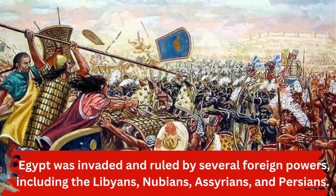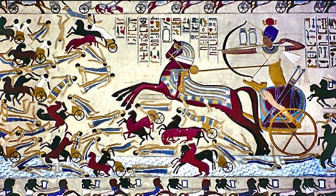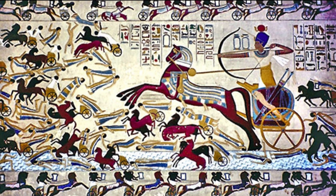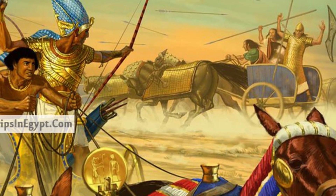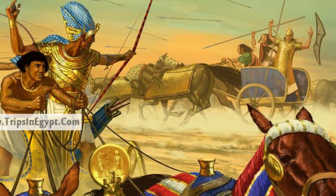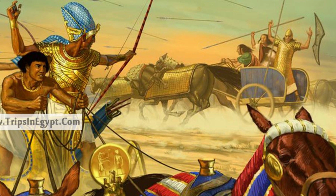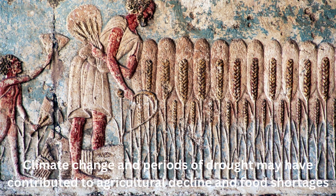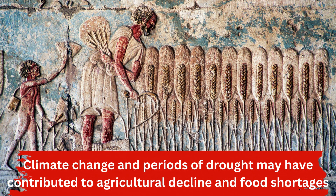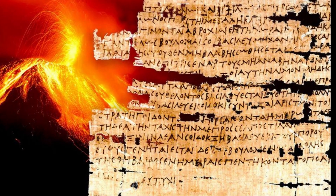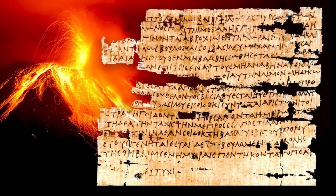These foreign powers often imposed their own political, economic, and cultural systems on Egypt, weakening the country's sense of identity and cohesion. Another factor was internal political instability and power struggles. The pharaohs of the late New Kingdom, c. 1550–1069 BCE, faced challenges from rival factions within the government and from powerful regional governors who challenged their authority. These power struggles weakened the central government. Environmental factors also played a role, as climate change and periods of drought may have contributed to agricultural decline, food shortages, social unrest, and political instability.